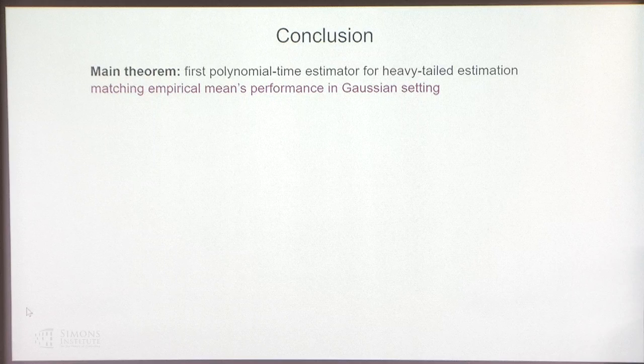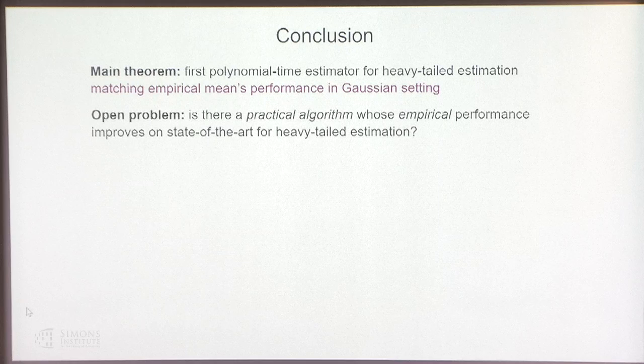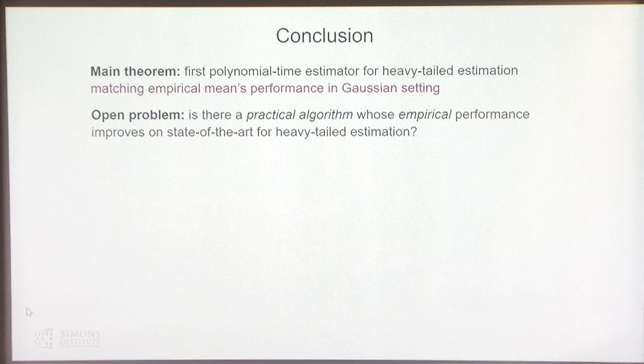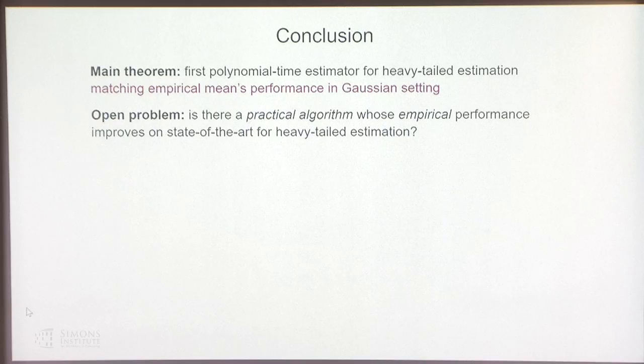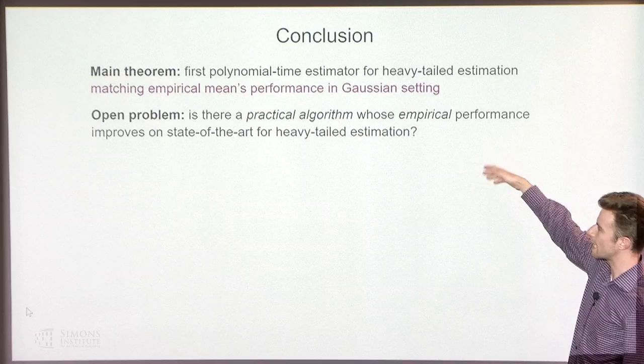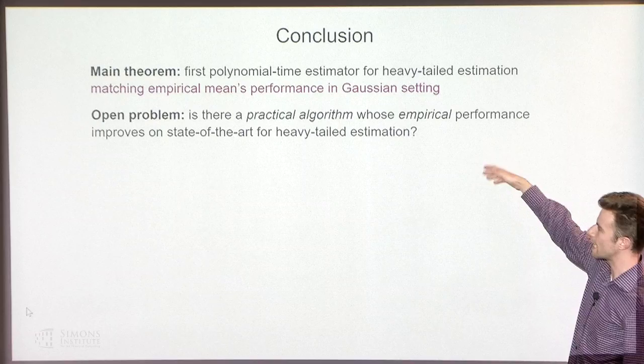In conclusion, the main theorem is the first polynomial-time estimator achieving sub-Gaussian rates in the heavy-tailed setting in high dimensions. The algorithm is not yet practical — it answers the existence question but doesn't go beyond that. Future questions include: can this algorithm be made practical? And can you find a practical estimator with empirical performance that outperforms the dimension-dependent estimators (like geometric median) which are already very fast in practice? Thanks very much for your attention.